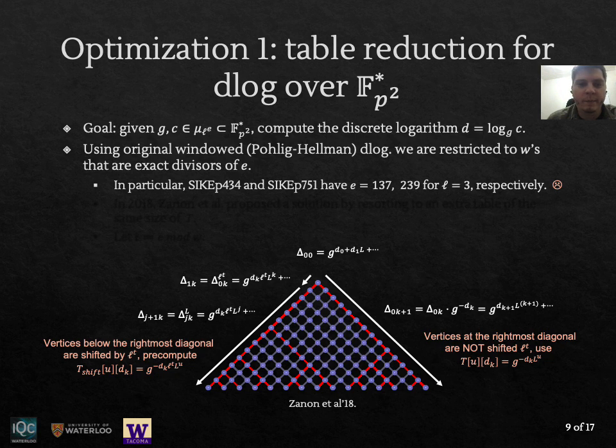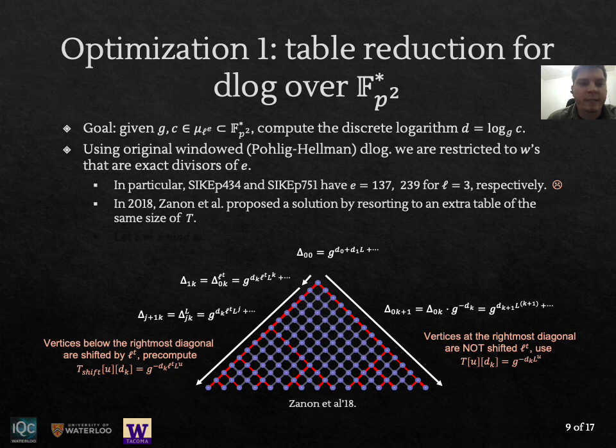Zanon et al. also suggested an approach to address this issue by using an extra table of the same size of the previous table T. So in their approach let t be e mod w. What's going to happen is that if you used the original description by raising the elements to the power of ℓ^w when you go to the left, when you get to the first leaf here you basically get an element of order ℓ^t instead of ℓ^w. So basically we are going to be recovering less information about the digits.